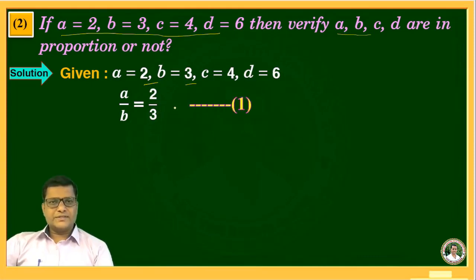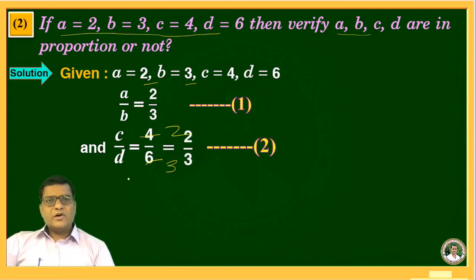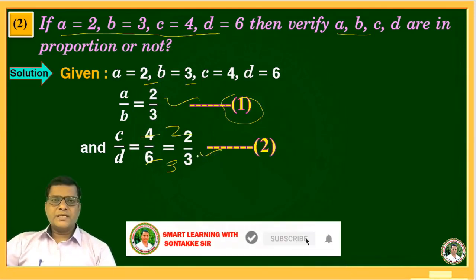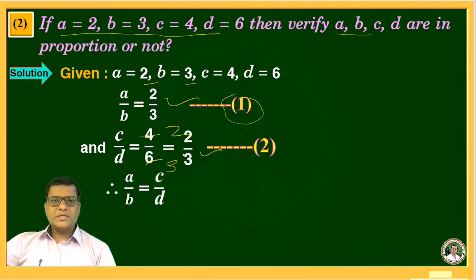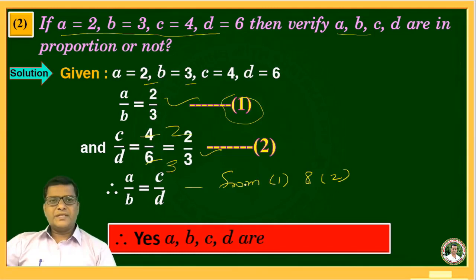And C upon D is equal to 4 upon 6, where C is 4 and D is 6. Simplifying: 2 twos are 4, 2 threes are 6, so C upon D equals 2 upon 3. This is equation two. Observing equation one and equation two: equation one gives 2 upon 3 and equation two also gives 2 upon 3. Since both ratios are equal, A upon B is equal to C upon D. Therefore, A, B, C, D are in proportion.